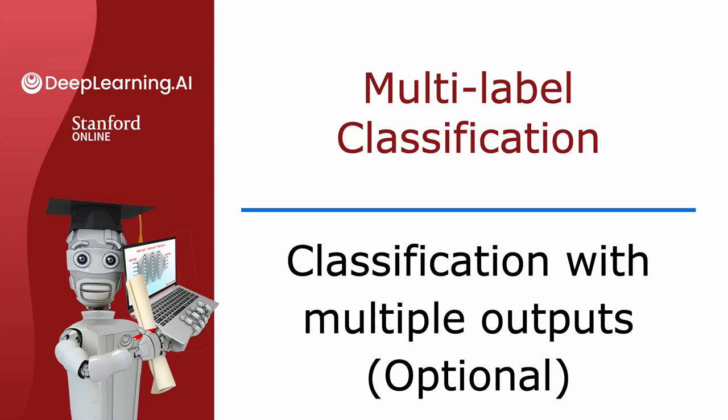You've learned about multi-class classification, where the output label Y can be any one of two or potentially many more than two possible categories. There's a different type of classification problem called a multi-label classification problem, where associated with each image, there could be multiple labels.